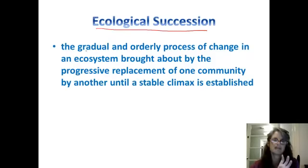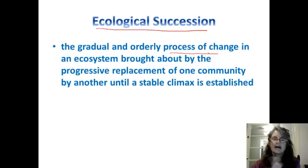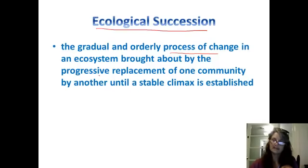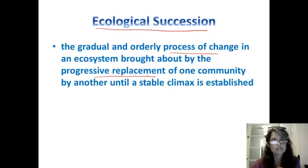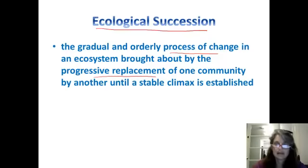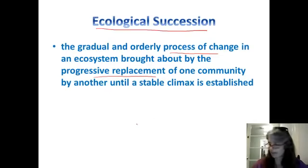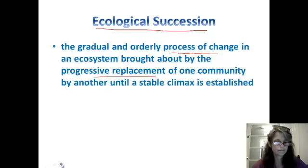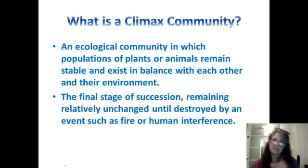Here's a dry definition, but get this in your head. The process of change in an ecosystem when one community that perhaps starts out the ecosystem is gradually replaced — the replacement of one community by another — until you get a stable community called a climax community becomes established. So we've got a number of things we need to talk about with this, not the least of which is what is this thing we're calling a climax community.